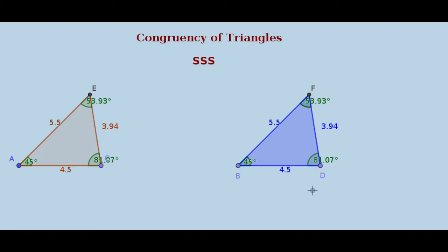Let us check whether the remaining three elements are equal — that is, the three angles. Yes, angle A equals the corresponding angle B, angle E equals the corresponding angle F, and angle C equals the corresponding angle D. Even if I change the sides, if all three sides of this triangle are equal to the corresponding sides of the other, then the angles are also equal and the two triangles are congruent. This postulate is known as the SSS postulate.